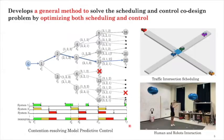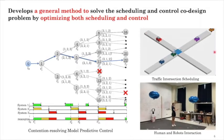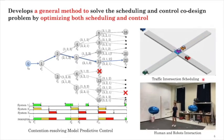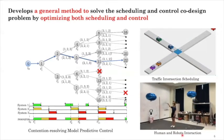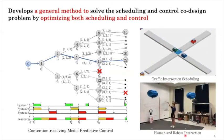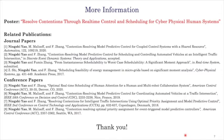My contribution is that I am able to find a general method to solve this difficult problem. We develop a new method that is able to solve the co-design problem in real time, called contention resolving model predictive control. We can theoretically prove that the solution obtained by contention resolving MPC is optimal to the original scheduling and control co-design problem. The method has been verified in several real-life applications, such as traffic intersection scheduling and human multi-robot collaboration systems. If you are interested in this work, please visit my poster. Thank you.